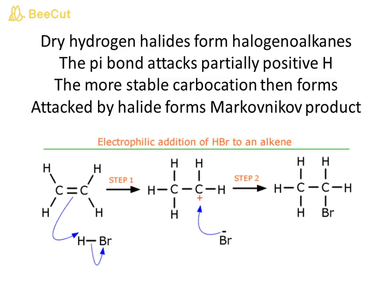Adding dry hydrogen halides to alkenes forms halogenoalkanes. The pi bond attacks the partially positive H, and the more stable carbocation then forms. Attack by the halide gives the Markovnikov product.